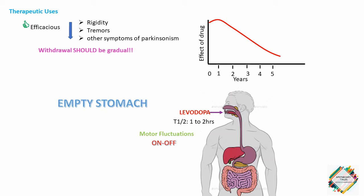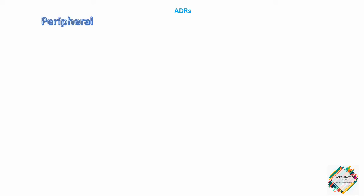Motor fluctuations may cause patients to suddenly lose normal mobility and experience tremors, cramps and immobility. The ingestion of meals, particularly those high in protein, would interfere with the transport of levodopa into the CNS. Hence levodopa should be taken on an empty stomach, typically 30 minutes before a meal.